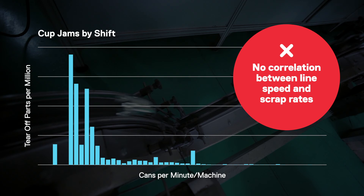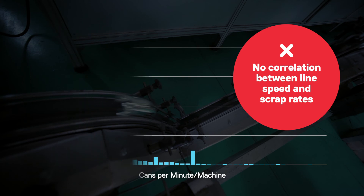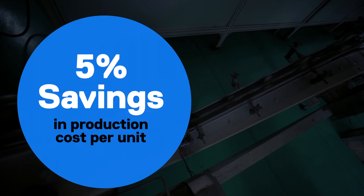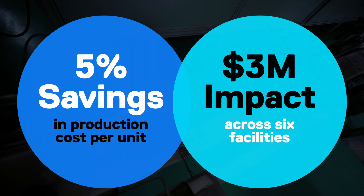The higher scrap volume was due to the higher overall output. The chart shows that the scrap in parts per million is not impacted by speed. The y-axis is the tear-off parts per million, the type of scrap, and the x-axis is the cans per minute, or the machine run rate. The high bars on the left are due to startup of the line, where they do have high scrap. But to the right, you can see the bars indicating scrap do not increase as you speed up the machine. This analysis, along with other scrap optimization efforts, are helping to drive a five percent saving in the production cost of each unit, translating to a three million dollar impact across six facilities producing cans and lids.